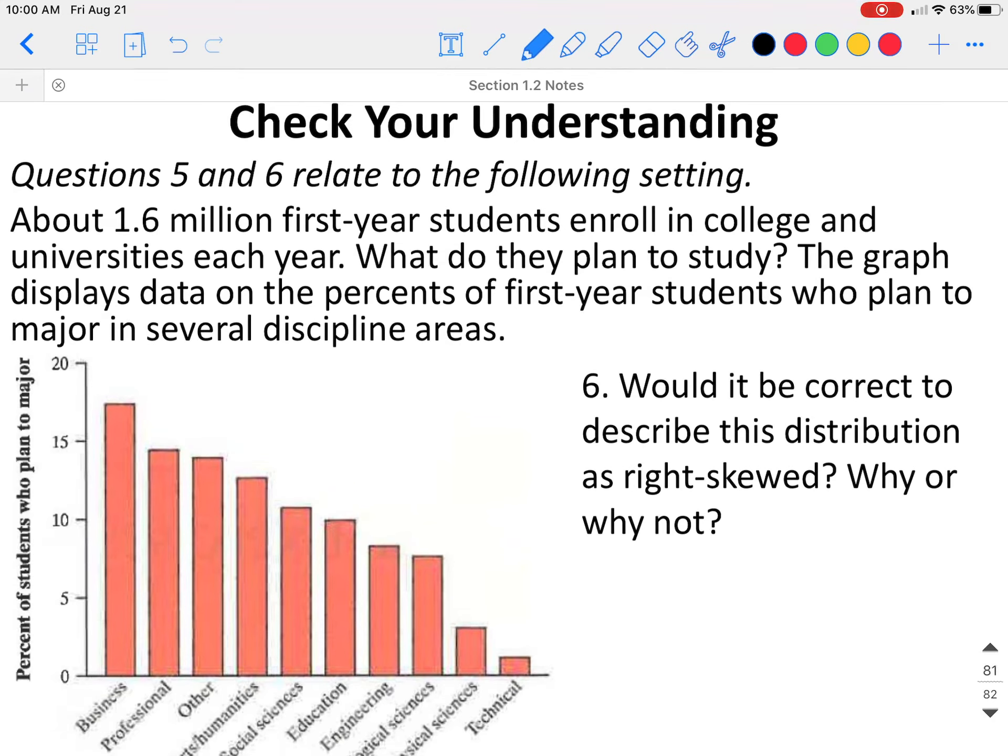Would it be correct to describe this distribution as right skewed? Why or why not? We only describe the data's shape as skewed or symmetric when we are dealing with quantitative variables. Since this variable is not quantitative but categorical, you should not describe the distribution as right skewed.